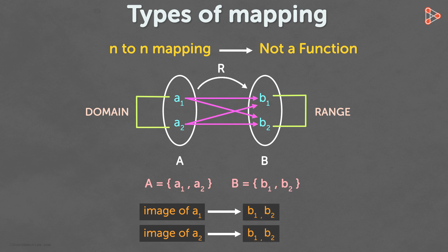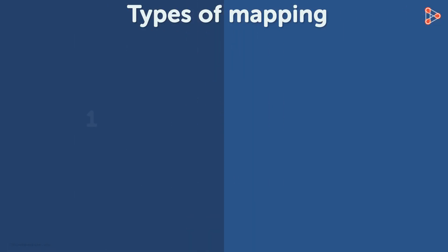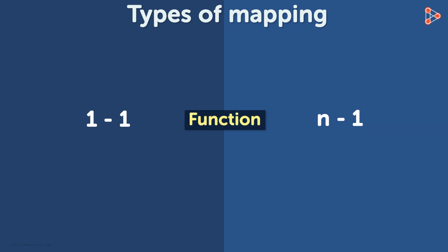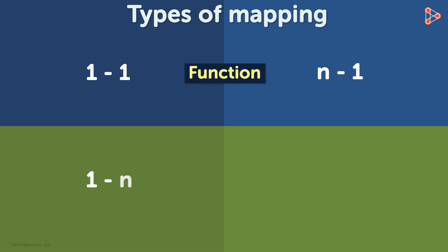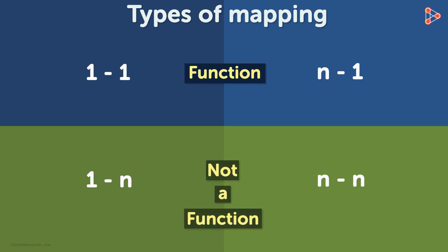Hope the concept of mapping is clear now. We saw that when the mapping is one to one or many to one, the relation is a function. And when the mapping is one to many or many to many, the relation is not a function.